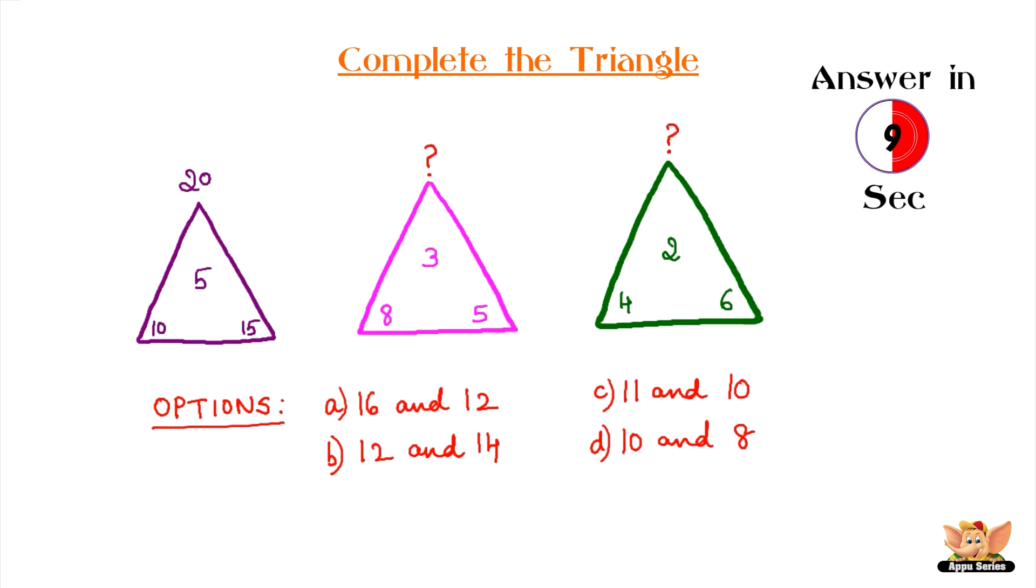This doesn't seem hard at all. Answer is Option D: 10 and 8. Here's how: add the corner numbers, subtract the middle number to get the outer number.